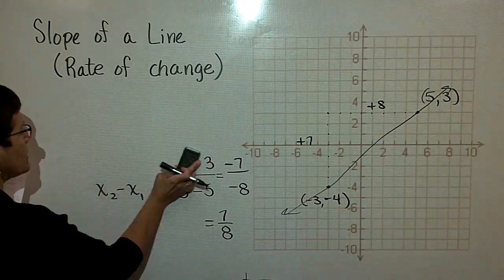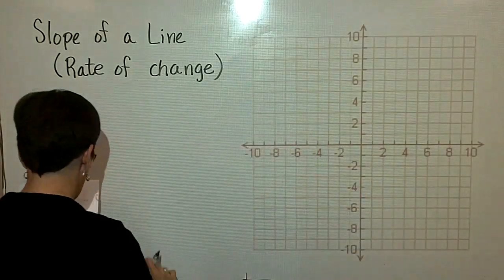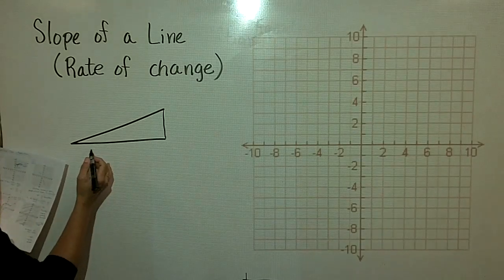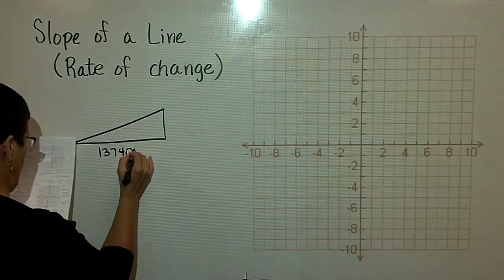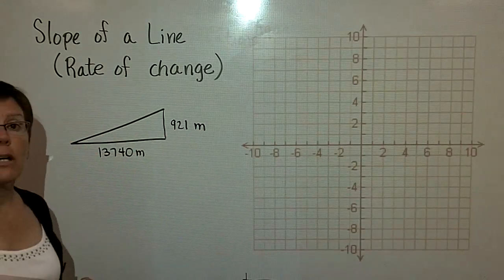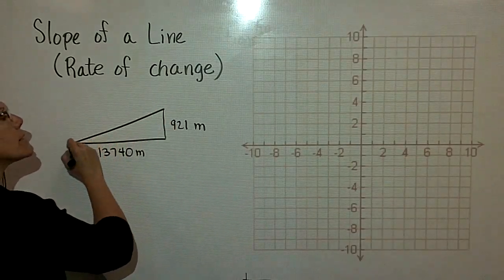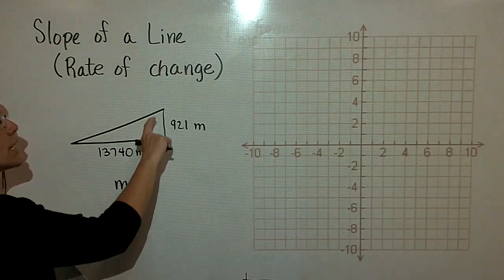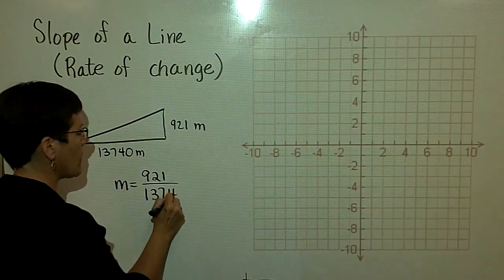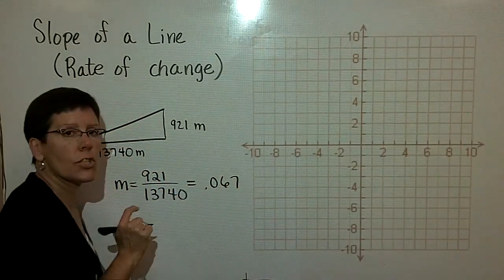Finally, if I wanted to find the slope in a road, here's an example of a road that has a horizontal distance and a vertical rise because this is an upward grade. And I want to find what's called its rate of change or, again, its slope, the slope of this line right here. Then what I'm looking at is the change in the Y value, the 921, divided by the change in the X value, the 13,740. And when I divide this out, I have .067, and I just chose to round that off there.